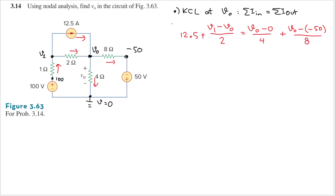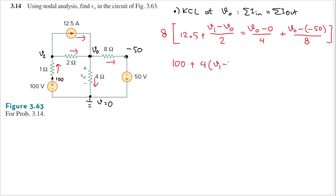Let's multiply both sides by 8 to eliminate all denominators, since 8 is a multiple of all of them. 8 times 12.5 is 100. The 2 and 8 cancel to give 4, so we have 4 times (v1 minus v0). The 4 and 8 cancel to give 2, so we have 2v0. The 8s cancel, so we have v0 plus 50.